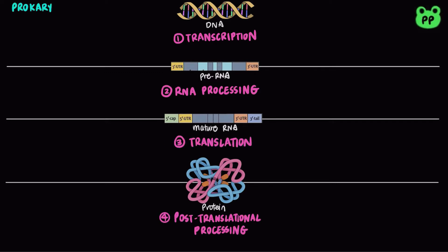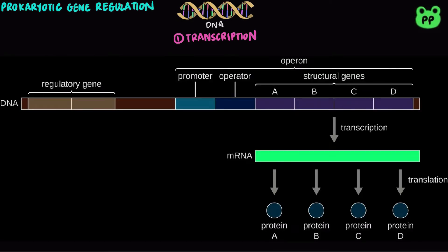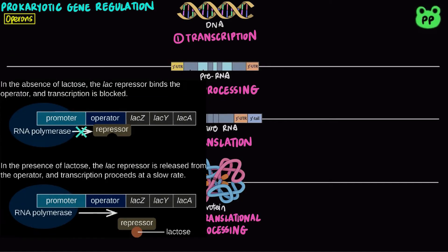The major mechanism in prokaryotic regulation of transcription involves operons, which refers to gene clusters that function together in regulation. Genes that code for catabolic or degradative pathways are typically regulated by inducible operons. They are off by default and only turn on in the presence of the substrate. An example would be the lac operon that functions in lactose catabolism.